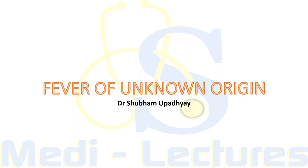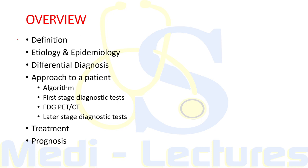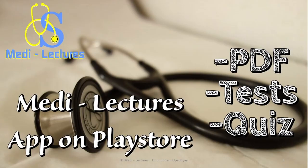Welcome back to the channel. Today we are going to discuss a very important topic: fever of unknown origin, also sometimes referred to as pyrexia of unknown origin. In this lecture we will first see the definition of PUO, then the etiology and epidemiology, differential diagnosis, causes, approach to a patient, the diagnostic algorithm, first stage diagnostic tests, the role of FDG PET-CT, later stage diagnostic tests, treatment options, and prognosis.